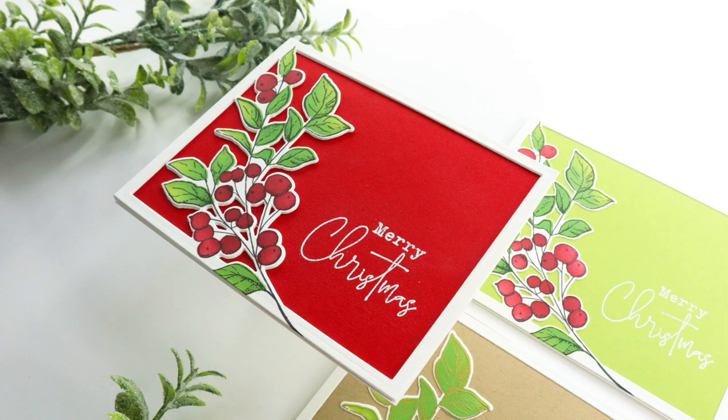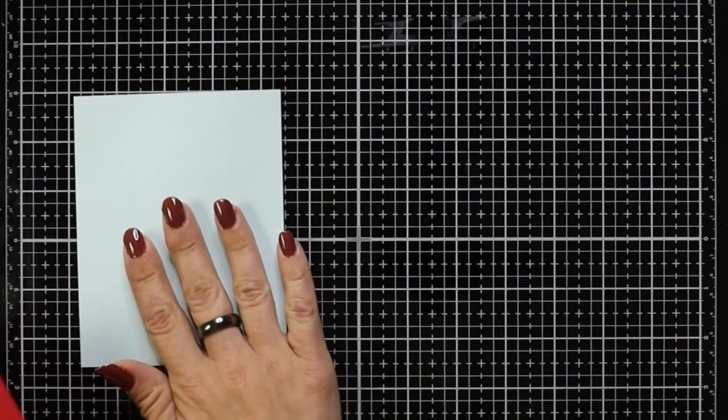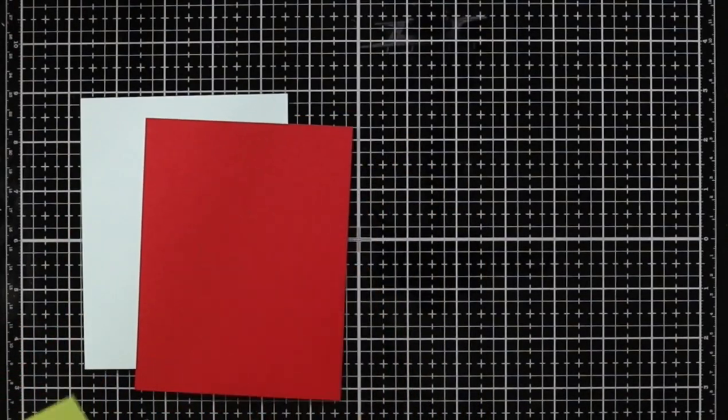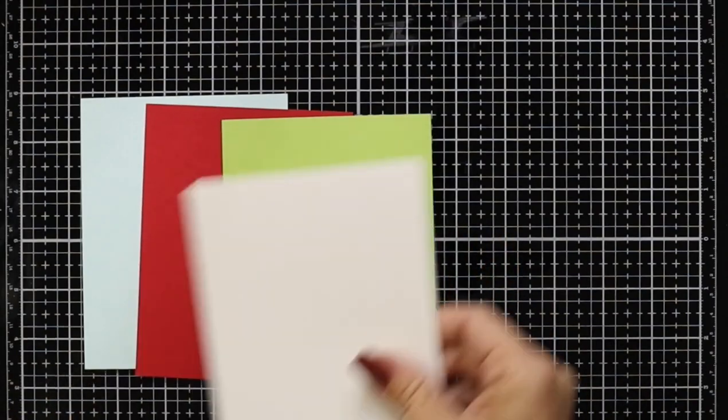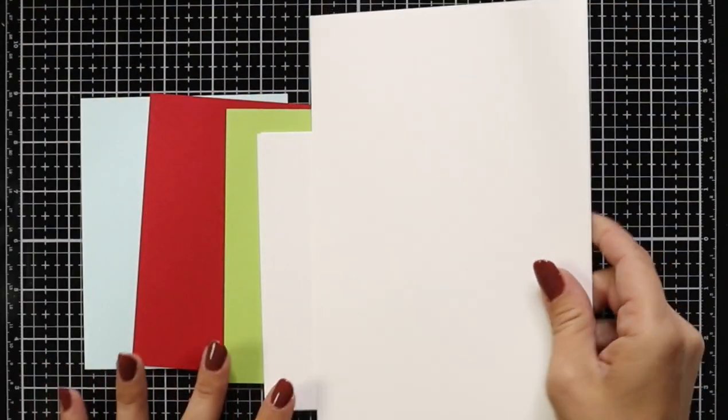First we'll take a look at some of the supplies I'll be using. For cardstock I have saltwater taffy, cherry red, granny smith, and some sugar cube cardstock.